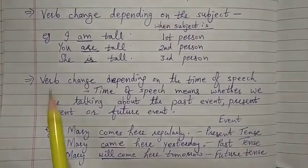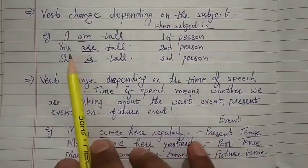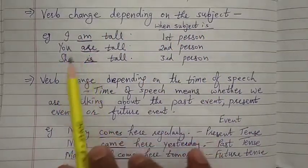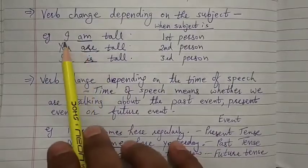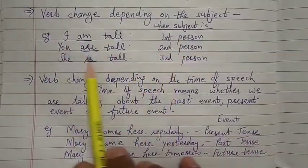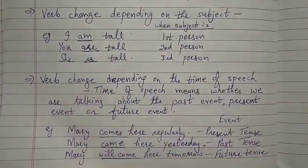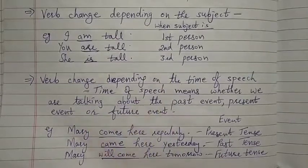A verb changes depending on the subject. For example: I am, you are, she is. Here, 'I' is first person, 'you' is second person, and 'she' is third person.